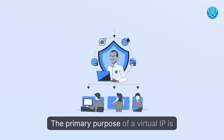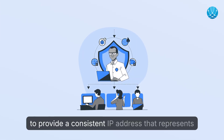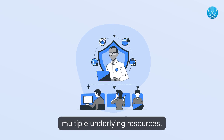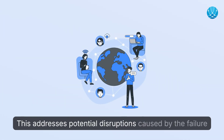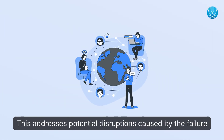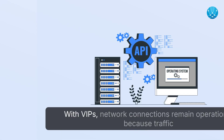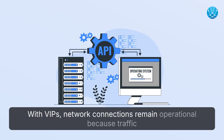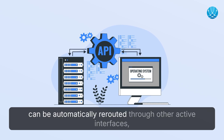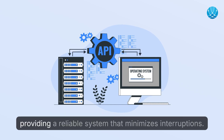The primary purpose of a virtual IP is to provide a consistent IP address that represents multiple underlying resources. This addresses potential disruptions caused by the failure of specific network interfaces. With VIPs, network connections remain operational because traffic can be automatically rerouted through other active interfaces and services, providing a reliable system that minimizes interruptions.